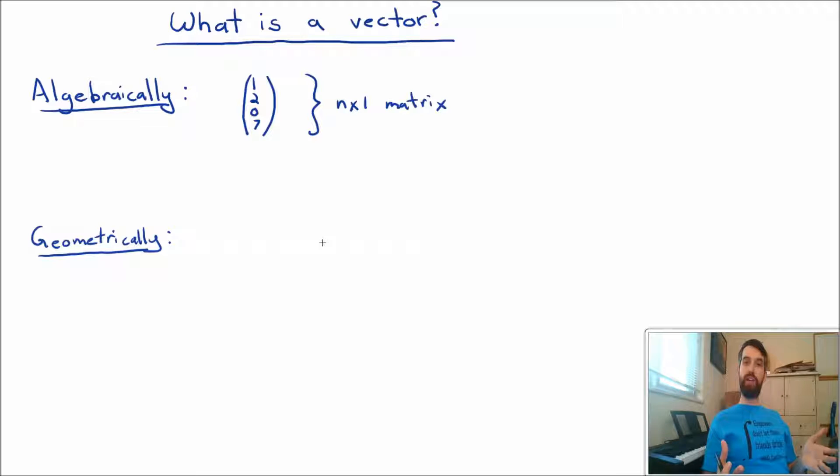Geometrically, the idea of a vector is going to appear, at least on first glance, to be quite different. Geometrically, a vector is some arrow. It's something that has a length and something that has a direction. It points in some way.